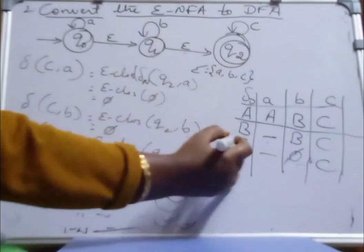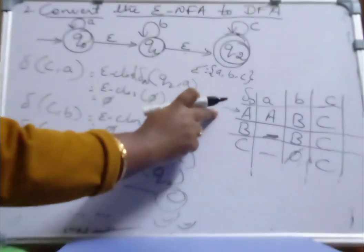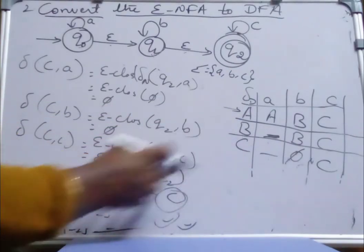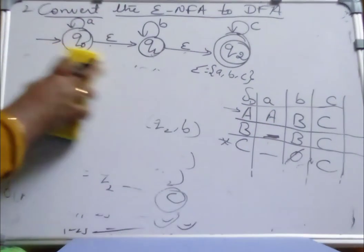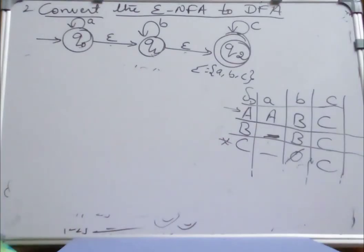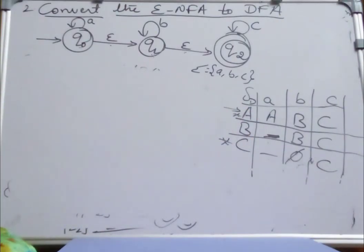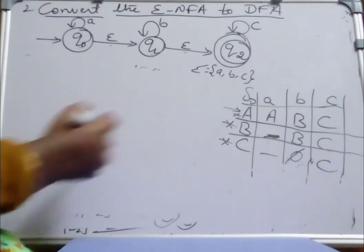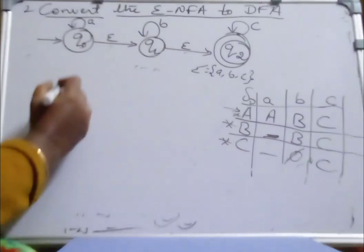We didn't get any new states — we have only 3 states total. This is our DFA. A is our starting state since Q0 is present in A. Q2 is our final state in the NFA. Q2 is present in state C, so C will be a final state. Q2 is also present in state A (which contains Q0, Q1, Q2), so A is also a final state. And Q2 is present in state B (which contains Q1, Q2), so B is also a final state. Totally we have 3 final states.